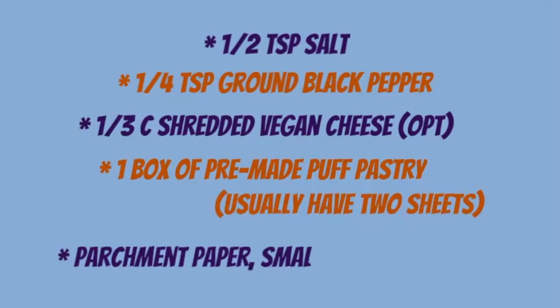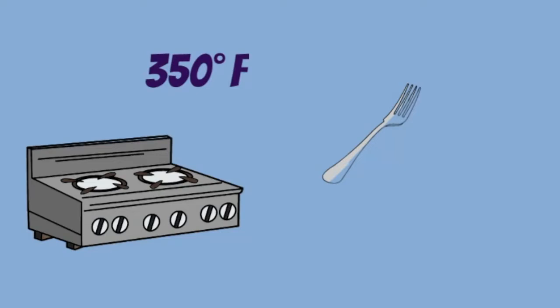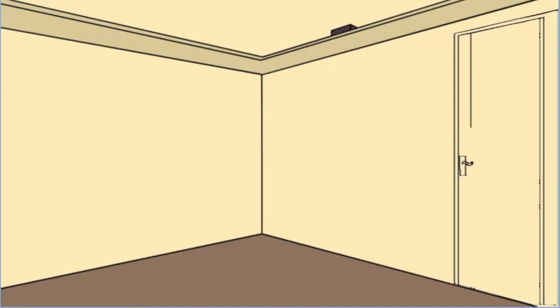Next you're going to preheat the oven to 350 degrees Fahrenheit. In a small bowl, pour the vegetable broth and add the cornstarch. Stir with a fork to combine and set aside. In a medium sized saucepan, heat the tablespoon of olive oil over medium heat. Add the sage, onions, and garlic. Cook for a few minutes until the onions are just turning translucent.